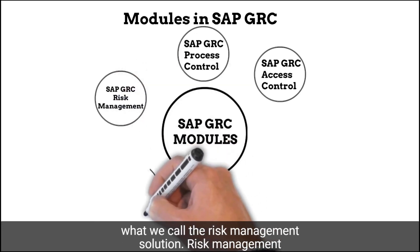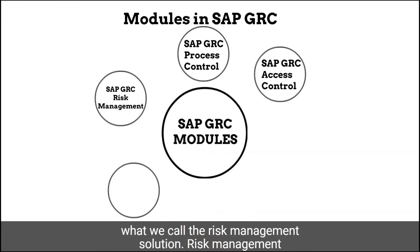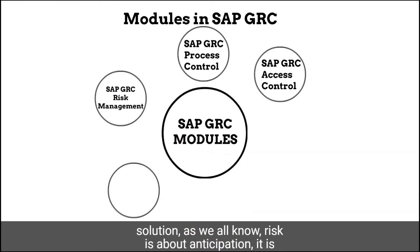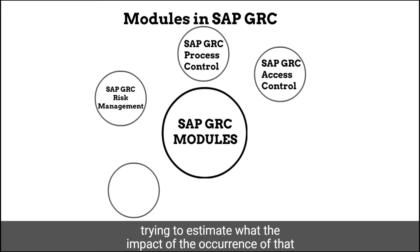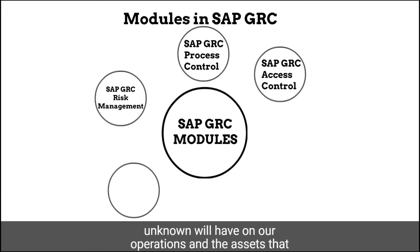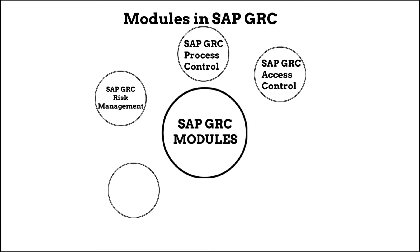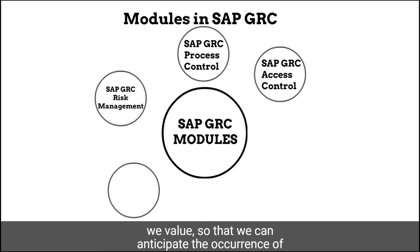We also have the risk management solution. Risk management, as we all know, is about anticipation and estimation — working with the unknown and trying to estimate what the impact of the occurrence of that unknown will have on our operations and the assets that we value, so that we can anticipate such occurrences and be able to better manage them.